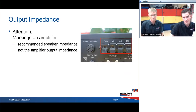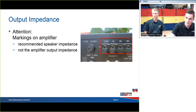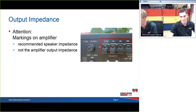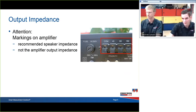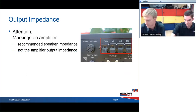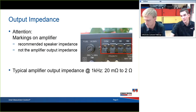The output impedance — you have to look at the outputs of the amplifier. As you can see on the right side of the picture, there are 4 Ω, 8 Ω, and 16 Ω output impedances declared. But these declared impedances aren't the real impedances of this amplifier — these are just values for the recommended loudspeakers. The real impedances are between 20 mΩ and 2 Ω, and are also measured at 1 kHz.